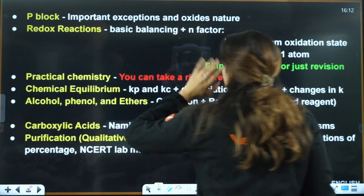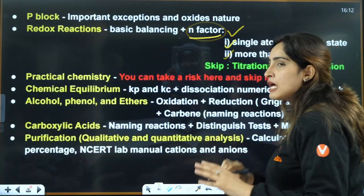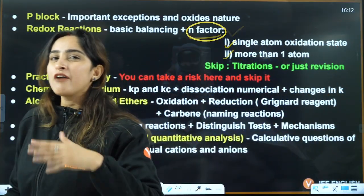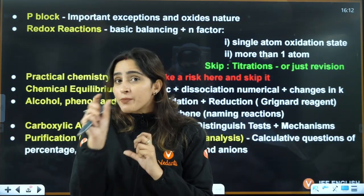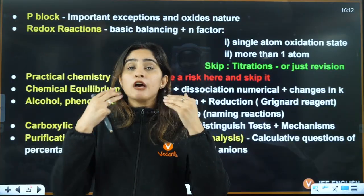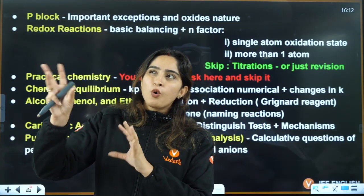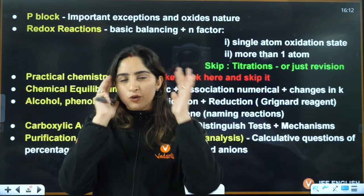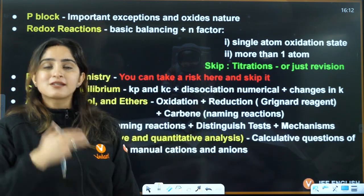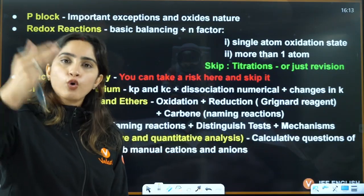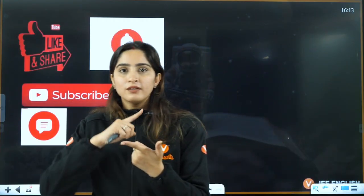For redox reactions: balancing — know one of the two methods — and n-factor calculation is a must. For titrations, have a basic idea as it also appears in ionic equilibrium. Know when phenolphthalein and methyl orange are used. Have a little idea about acid-base titration and iodometric titration — chances are less that they'll ask, but do a good revision of the theory once.